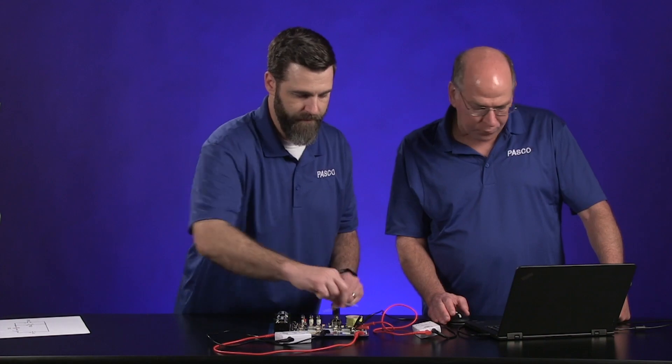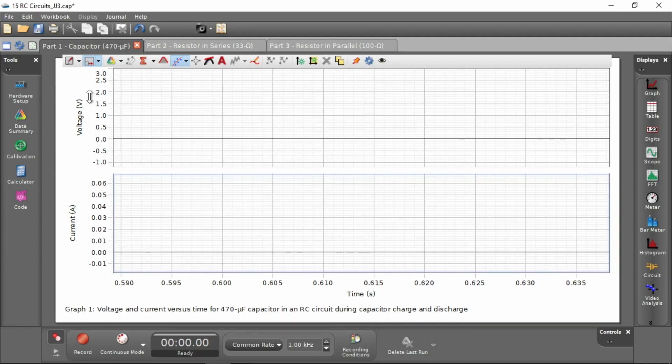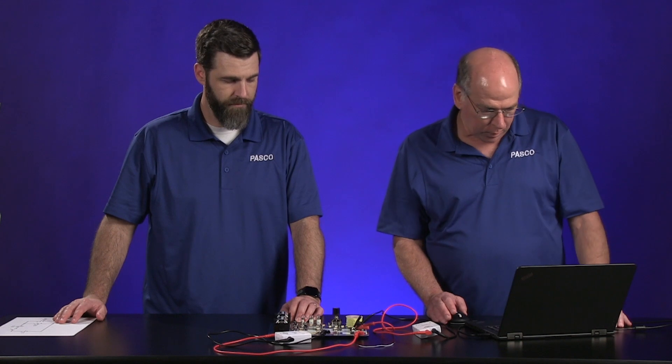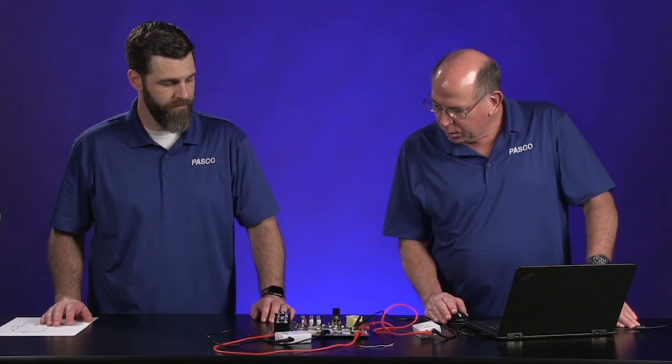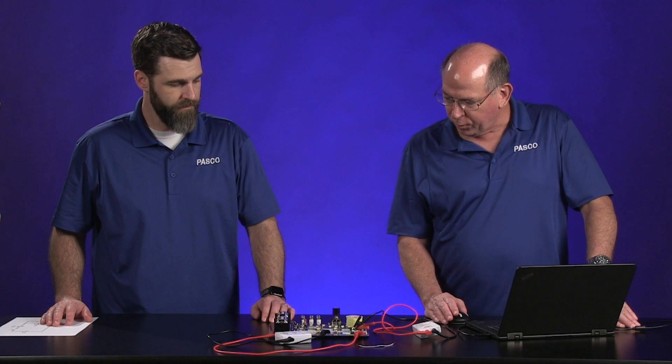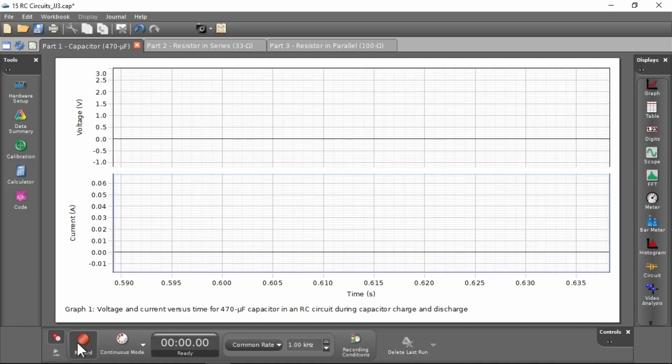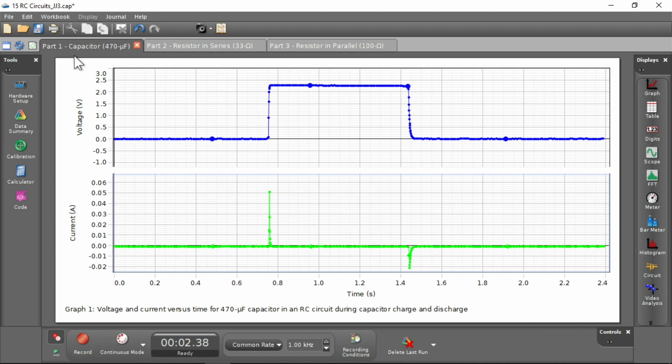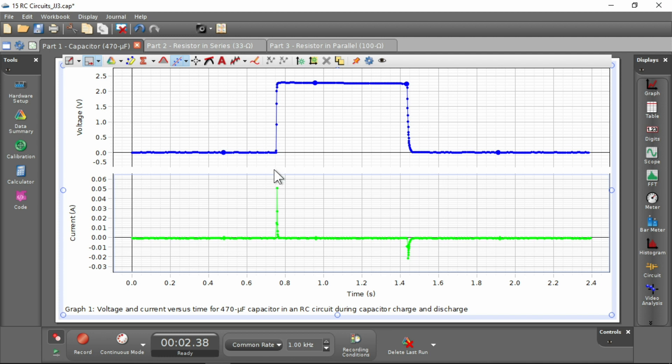Right. So I have a voltage graph and a current graph and we're measuring at one kilohertz. So if this happens fast, we should be able to see any changes and there's a switch would close the circuit. So whenever you're ready, I'll hit record. And so we have our data and you can see the voltage went real rapidly up to some steady value across the capacitor. And the current just quickly went up to some maximum value, then dropped to zero.